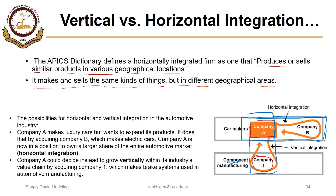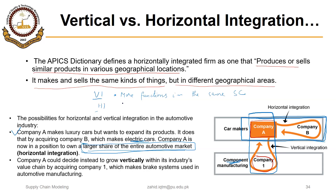So company A makes luxury cars, and once it expands its product by acquiring company B which makes electric cars, company A is now in a position to own a larger share of the entire automotive market. In vertical integration, the company has more functions in the same supply chain. In horizontal integration, it gains more market share.